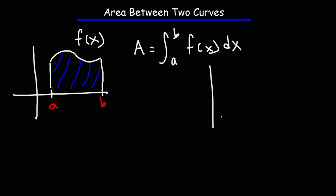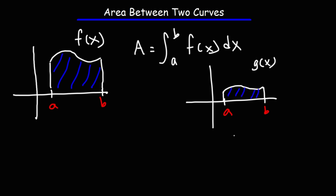Now let's say if we have another function from a to b and let's call this function g of x. The area under this curve is going to be the integral from a to b of g of x dx.